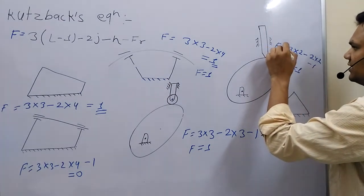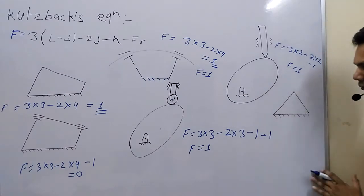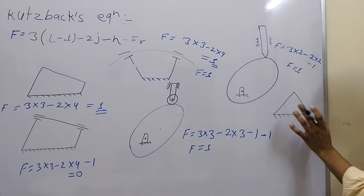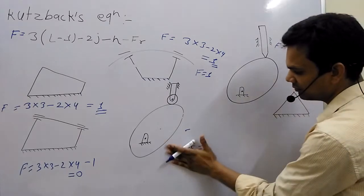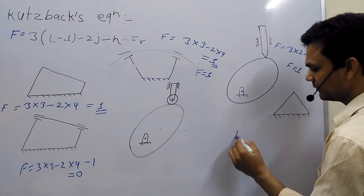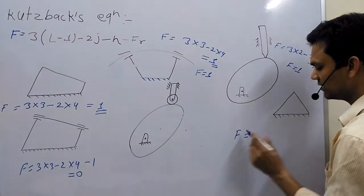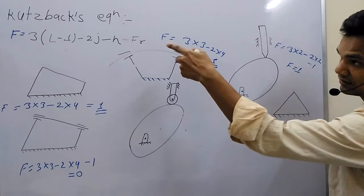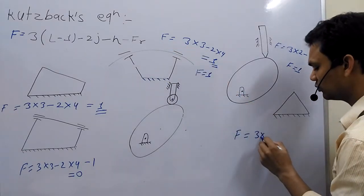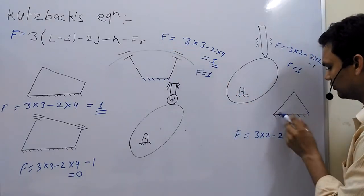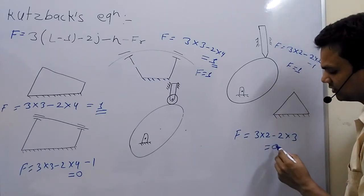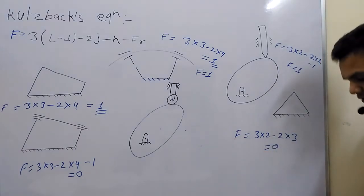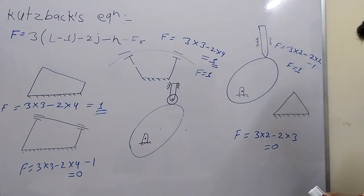So you can see, now if we consider this, if we find the degree of freedom of this system, you can see F is equal to: one, two, three. Three minus one equals two, three into two, minus number of joints: one, two, three, into three. You can see, degree of freedom of this system is zero — this is called a frame or structure.